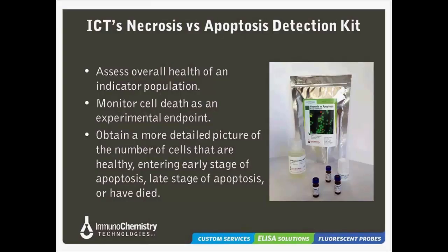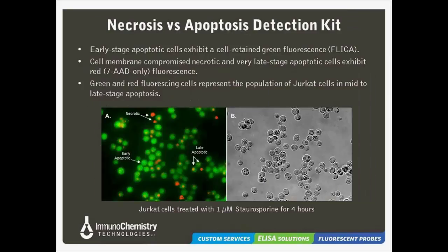One other kit I wanted to mention is our necrosis versus apoptosis kit. As discussed earlier, these two types of cell death are both important in Alzheimer's disease and other cell culture studies. This kit allows you to identify both apoptotic and necrotic cells within a single sample. Apoptotic cells are identified using ICT's FLICA reagent probe. Loss of the integrity of the cell membrane, indicative of necrosis or late-stage apoptosis, is detected using the vital staining dye 7-AAD, a red fluorescing live-dead stain. This dye easily penetrates cell membrane-compromised cells, binding tightly to GC-rich regions of the DNA. Combining FAM-FLICA with 7-AAD can provide a more detailed picture of the overall health of the cell population. In this image, early-stage apoptotic cells are stained green, necrotic cells only exhibit red fluorescence, and some green and red fluorescing cells are in late-stage apoptosis.